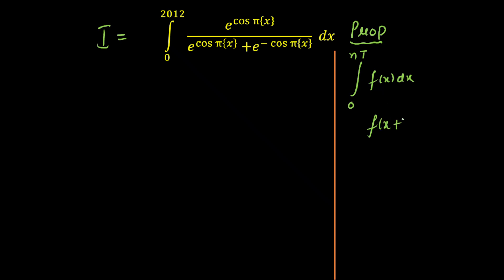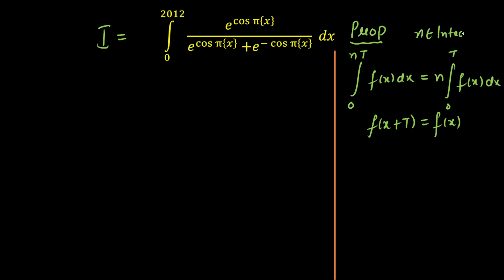If the function is periodic with period T, I can write f(x + T) = f(x). Then the integral equals n times integration from 0 to T of f(x) dx, given that n should belong to the integers. Otherwise this is not true.